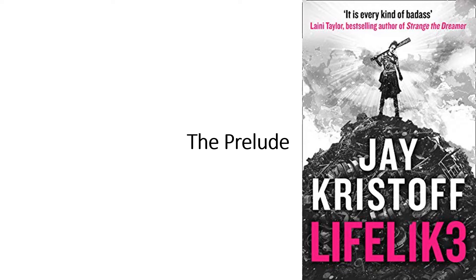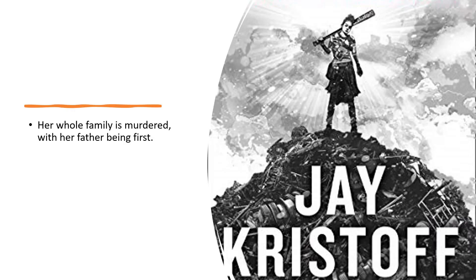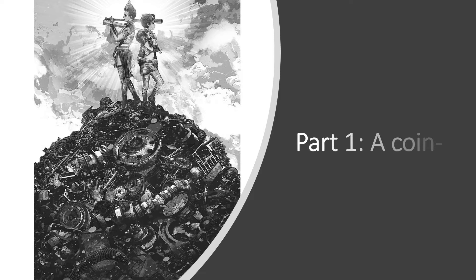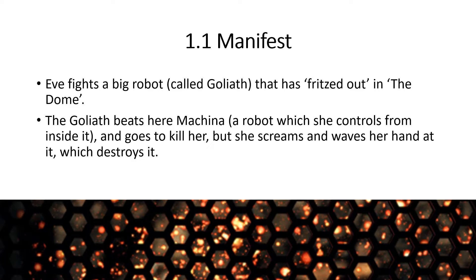The Preacher is trying to catch and kill Eve. In terms of part one of the book, we start with the prelude where we get our first flashback — we learn that whoever is narrating the flashbacks has their whole family murdered, and their father is the first to be killed. Part one is called 'A Coin-Operated Boy,' and we're trying to work out why — something to keep in mind as we read on.